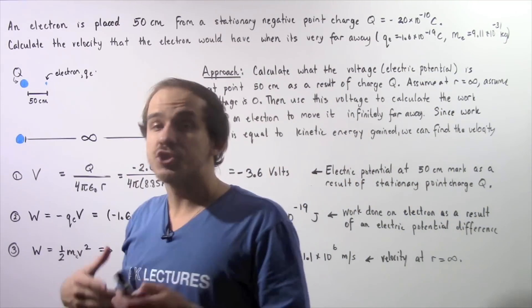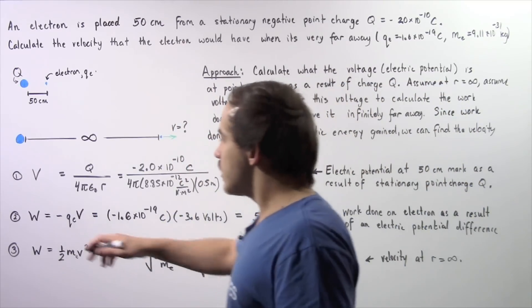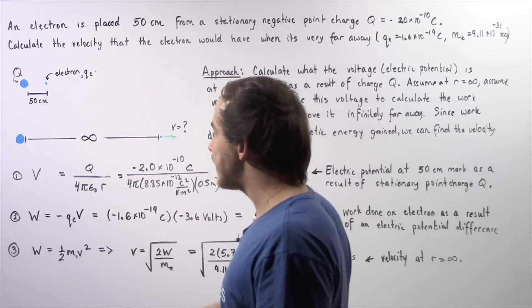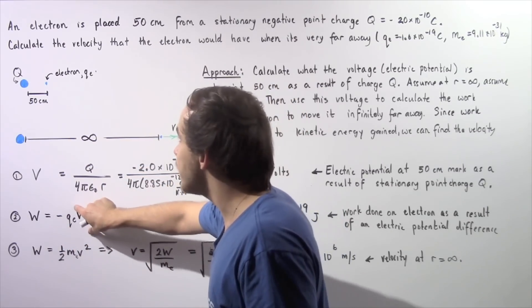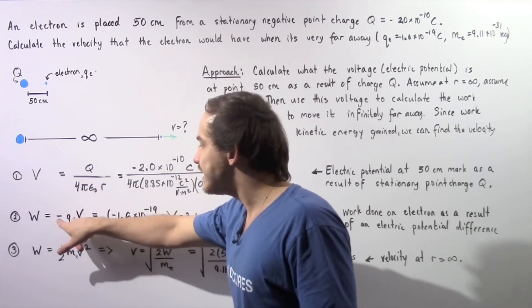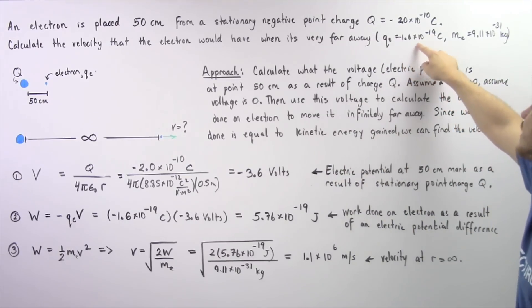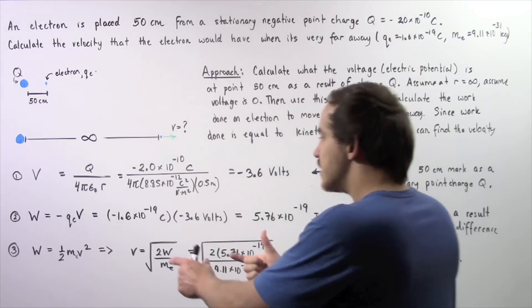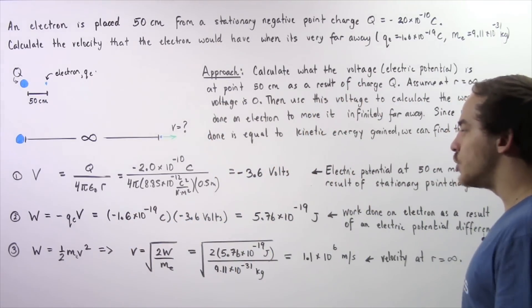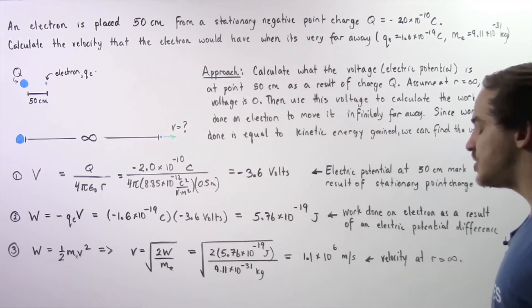Moving to step two, we calculate how much work is done on the electron. The work done on the electron equals the negative of the charge of the electron multiplied by the voltage at that point. The voltage was calculated in step one, and the charge of the electron is negative 1.6 times 10 to the negative 19 Coulombs. Multiplying these two quantities gives a positive value of 5.76 times 10 to the negative 19 joules.